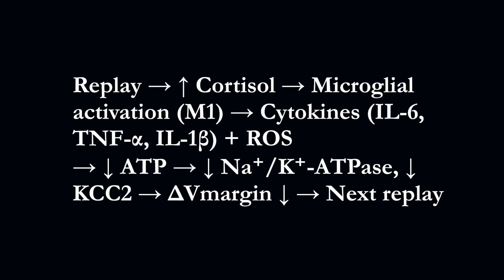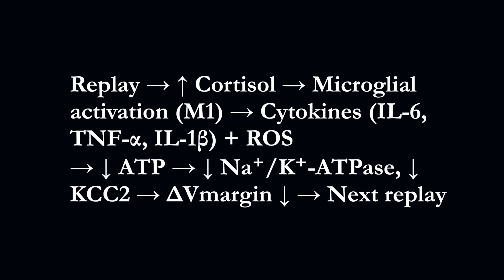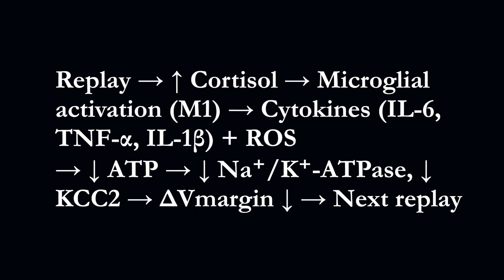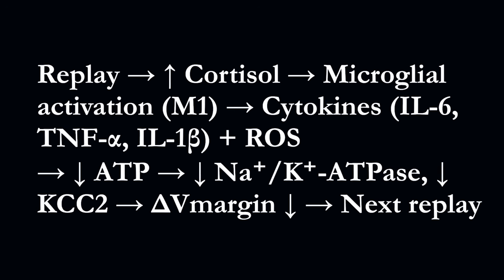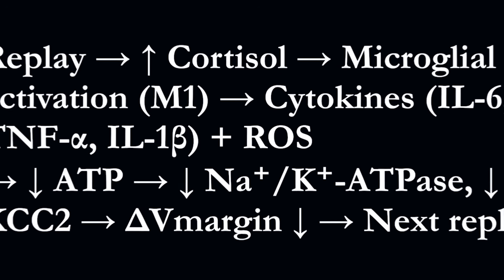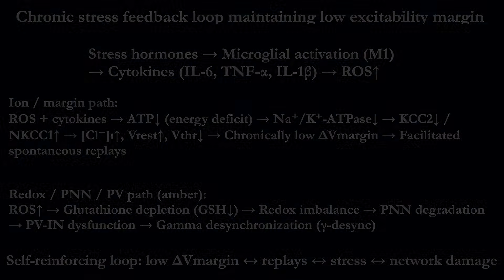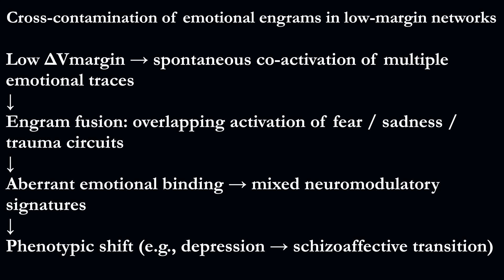This maintains a critically low excitability margin. Under these conditions, spontaneous replays generate additional sodium and calcium influx at the axon initial segment, further lowering the firing threshold and stabilizing the delta V-margin collapse state. The resulting oxidative stress depletes glutathione, degrades perineuronal nets and weakens PV interneurons, leading to gamma desynchronization and the progression of mood and perception symptoms.